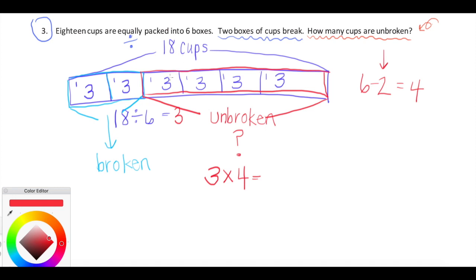We can skip count by threes here. Three, six, nine, twelve. Beautiful. So, the good news is, twelve of the cups are unbroken. This is a really great problem. Let's check out one more here, friends.